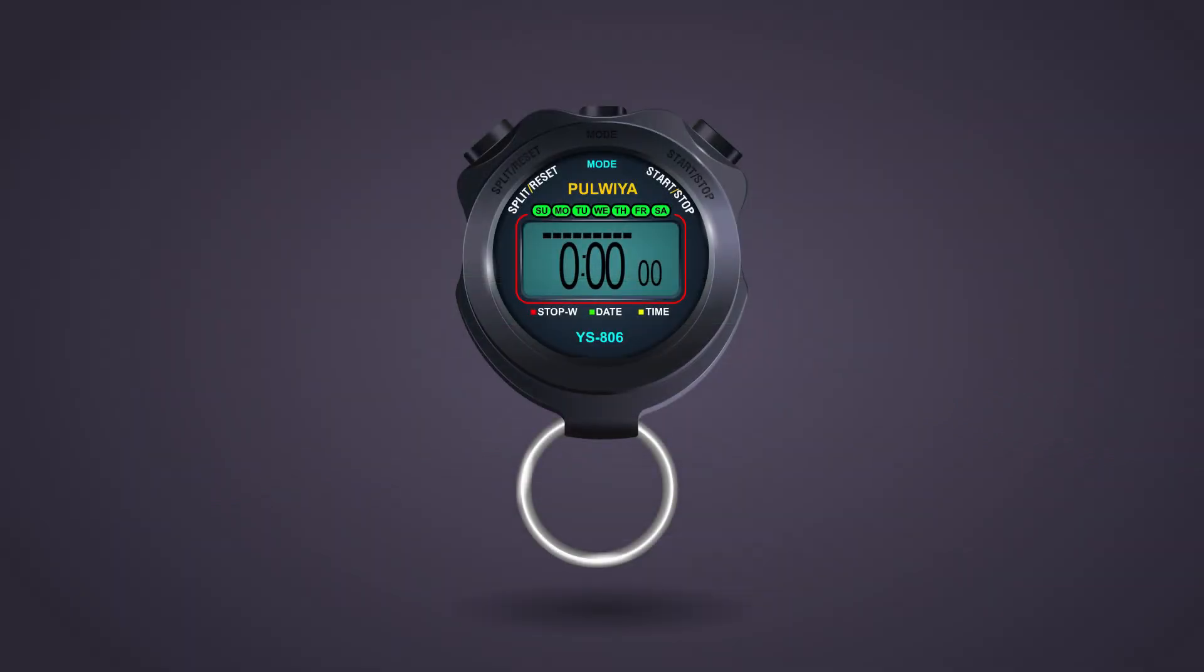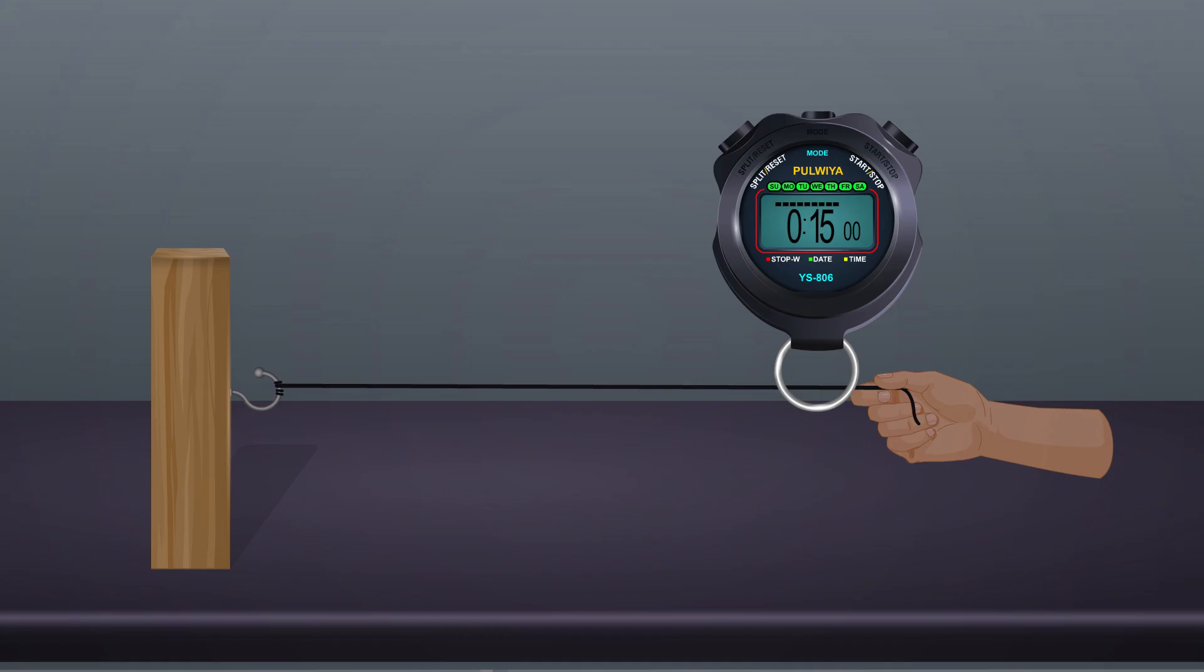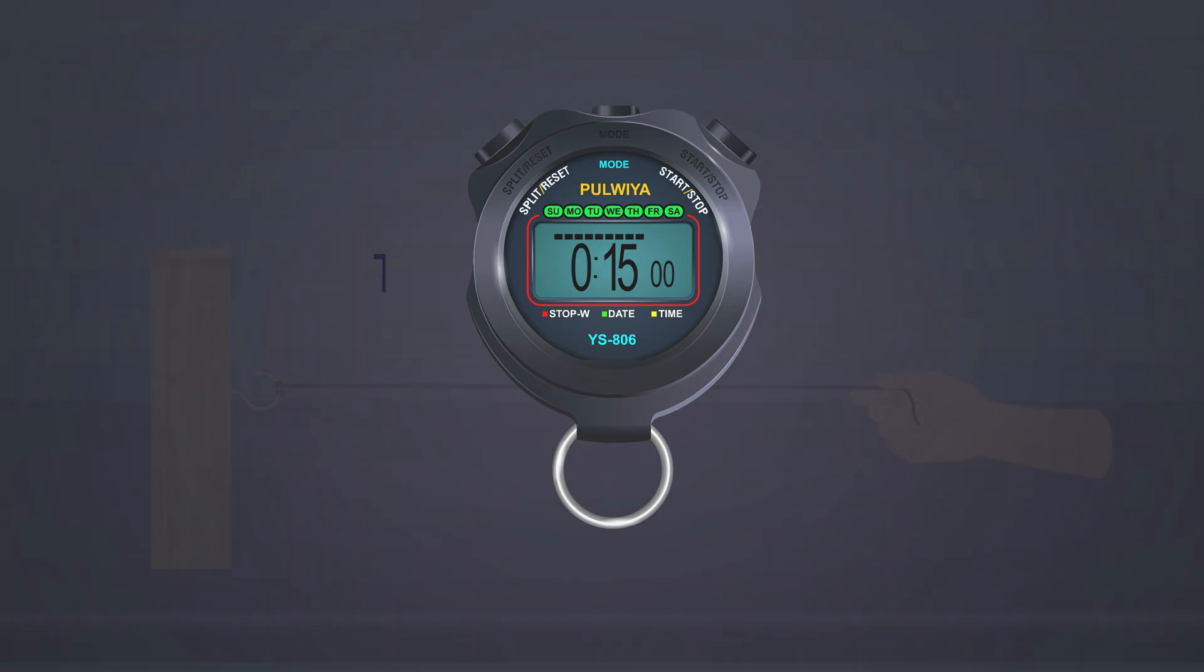Create a pulse and simultaneously start stopwatch. Observe the time for n journeys. Calculate time period by T = t/n, where t is time for n journeys and n is number of journeys.